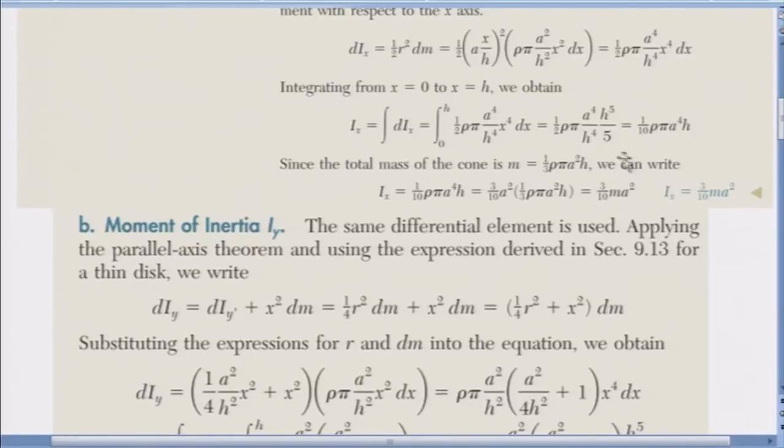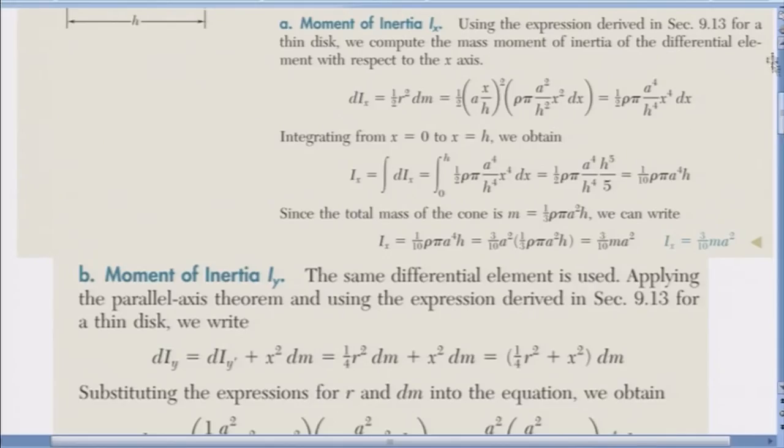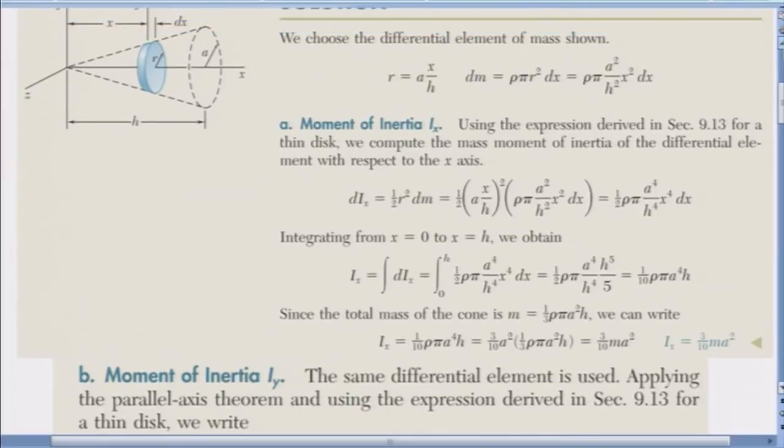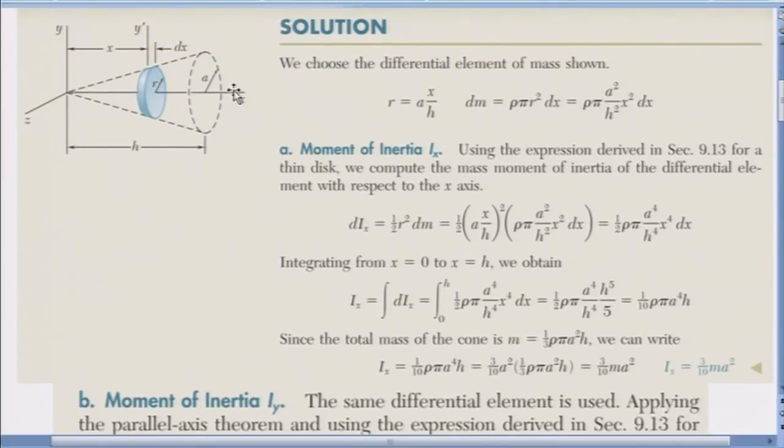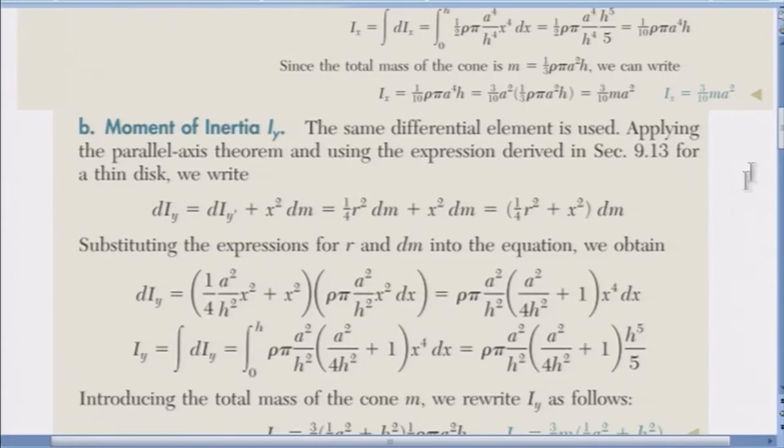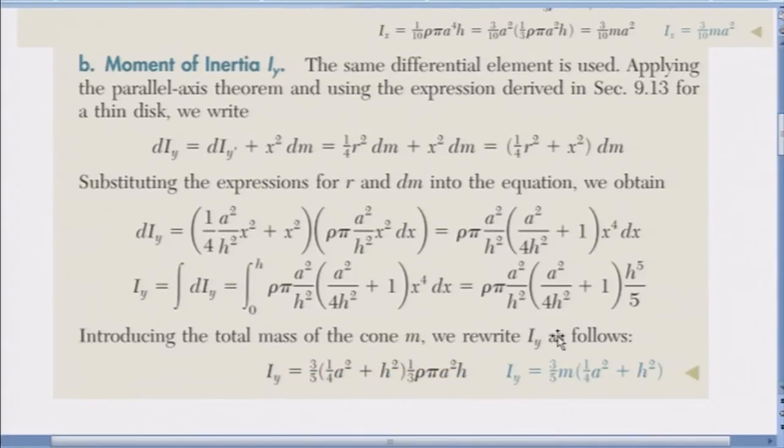Similarly, remember for when we are doing the Iy, we can calculate D Iy prime, and then we have to look at the parallel axis theorem to go to the y. So the final answer is 3 by 5 m, 1 by 4 a square plus h square.